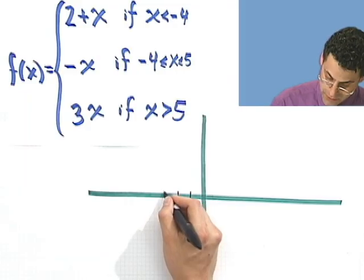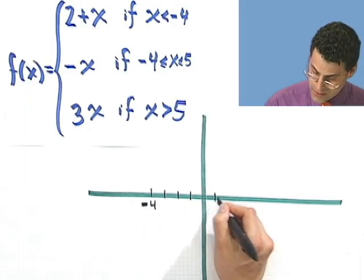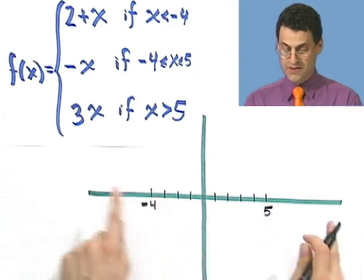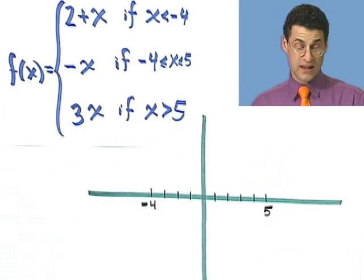1, 2, 3, 4. There's minus 4. 1, 2, 3, 4, 5. There's 5. So I know things are going to happen there, between there. I've got to be careful.